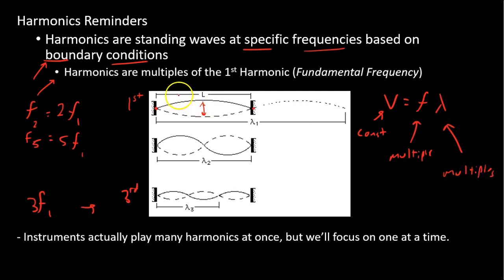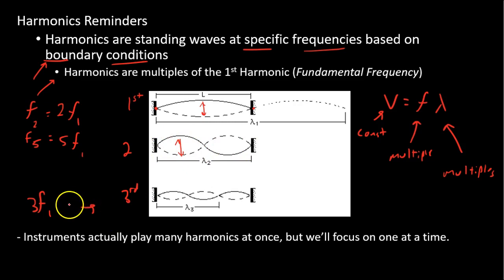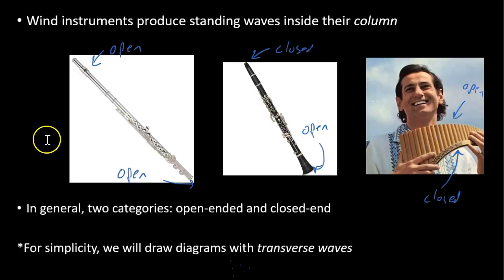The wavelength must be going down in multiples. We can see that, because in the fundamental I can fit one half of a wave. For the second harmonic, which is two times the frequency, I can fit two times as much — the wavelength is two times as small. Here I have just a half; here I have a full wavelength. For the third harmonic, that's three times the fundamental frequency, so I should have one-third the wavelength. Also, just remember that musical instruments are actually producing many harmonics at once — we're just going to focus on one at a time.